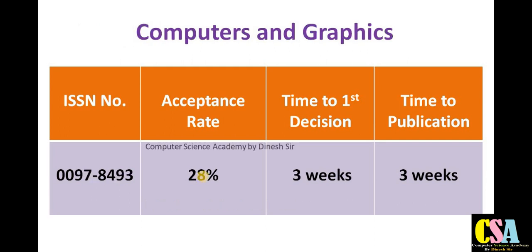The second journal title is Computers and Graphics. The ISSN number is 0097-8493. The acceptance rate of this journal is 28 percent, which is a great opportunity for all of you. The first decision you will get within three weeks, most probably within 20 days. The overall timing from submission to publication is within six weeks — most probably one and a half to two months. This is a rapid publication journal in the field of computer science.